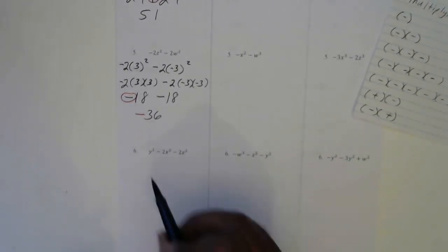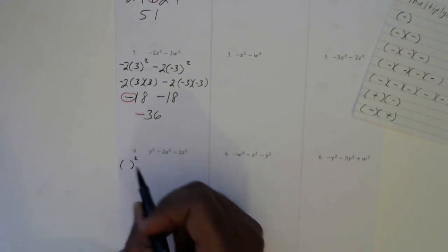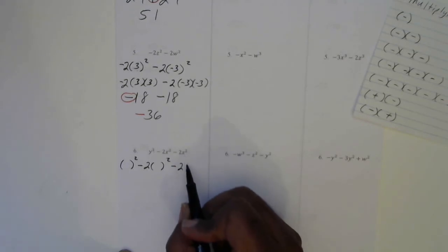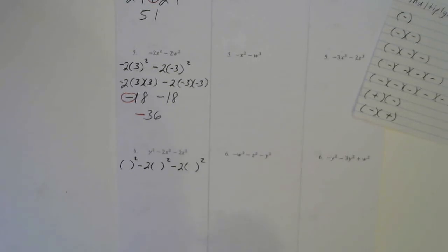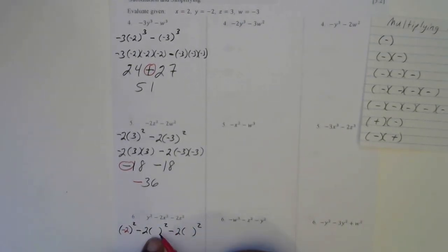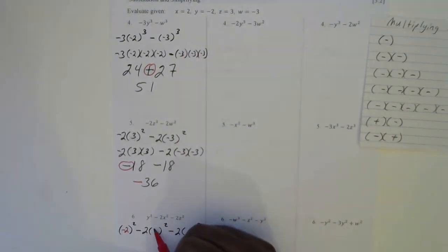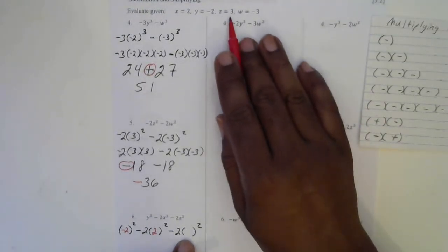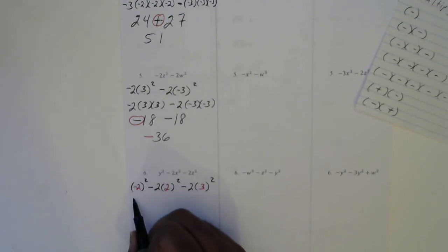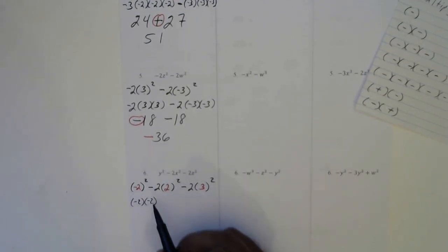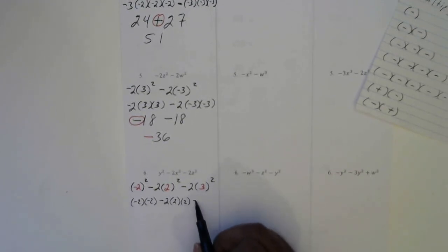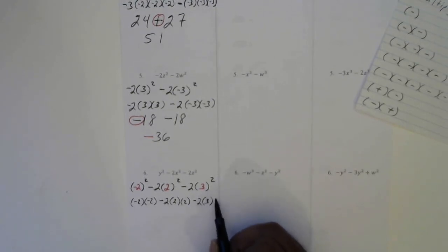Number 6. We have three terms here. We have a y to the second power, so we'll put a parenthesis here to the second power. A negative 2. The x will turn into a parenthesis to the second power — a negative 2. And a z here, so we'll put a parenthesis to the second power. The y is a negative 2, so we'll put a negative 2 in here. The x goes here, and the x is a 2, so we'll put 2 in there. The z is a 3, so we'll put a 3 there. Now I need to expand these — this negative 2 has to be written twice: negative 2 and then negative 2. Then we have a negative and a 2, and this 2 has to be written twice. Then we have a negative 2, and this 3 has to be written twice.